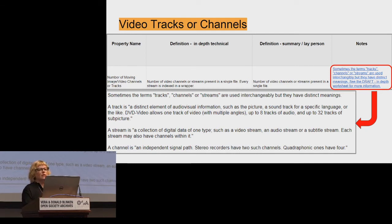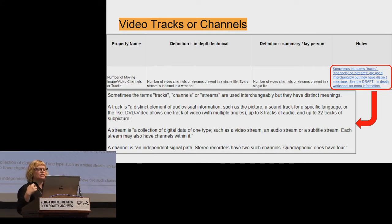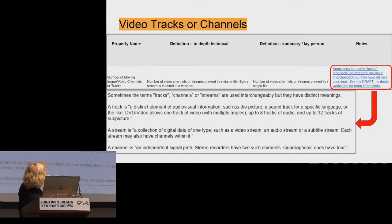Video tracks or channels — described by the National Archives of the Netherlands as image streams — we decided to parse out a little further. In our larger workbook we have several pages, one of which provides more information. A track, a channel, a stream — they're all used interchangeably but there is a little bit of a difference. We wanted to provide a link to a second page that talks about those differences — you want to summarize to an extent but also provide enough information.